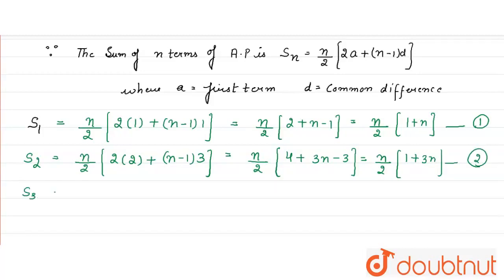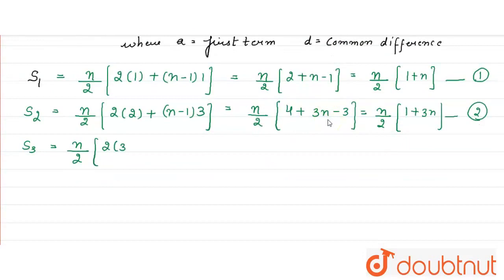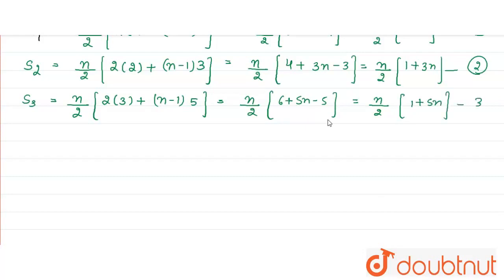Now we can find S3 also. For S3, the first term is 3 and the common difference is 5. So S3 = N/2 [2(3) + (N−1)(5)] = N/2 [6 + 5N − 5] = N/2 (1 + 5N). Give it equation number 3.